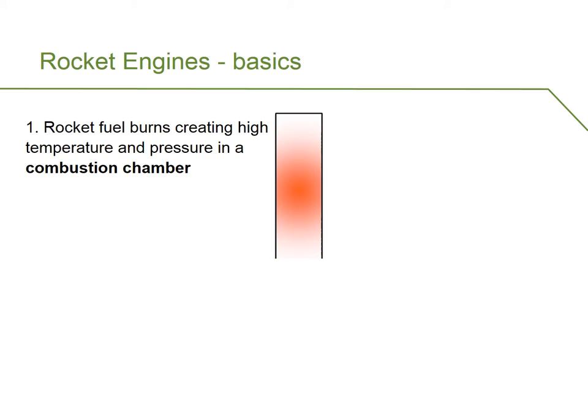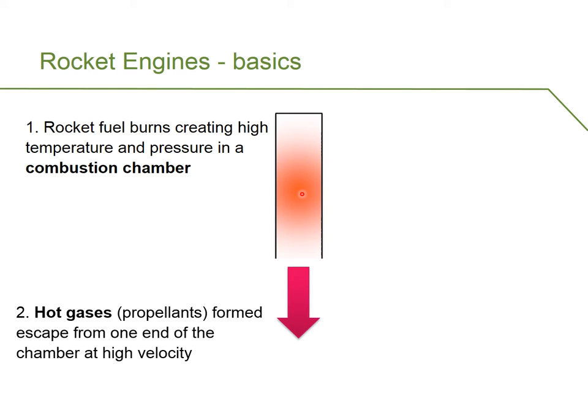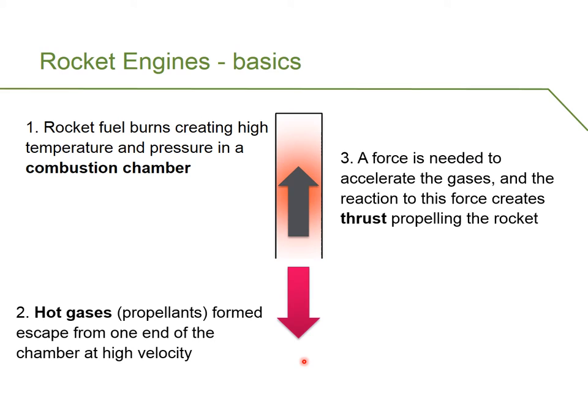Before we get started, let's make sure we've got clear in our minds basic ideas about what a rocket engine is and how it works. The basic idea of a rocket engine is actually very simple. Rocket fuel burns, creating high temperature and pressure in a combustion chamber. As a result, hot gases, also called propellants, are formed. They escape from one end of the chamber at high velocity downwards. As a result, a thrust is created. So we could say that a force is needed to accelerate these gases, and the reaction to this force creates a thrust, which is what propels the rocket upwards.